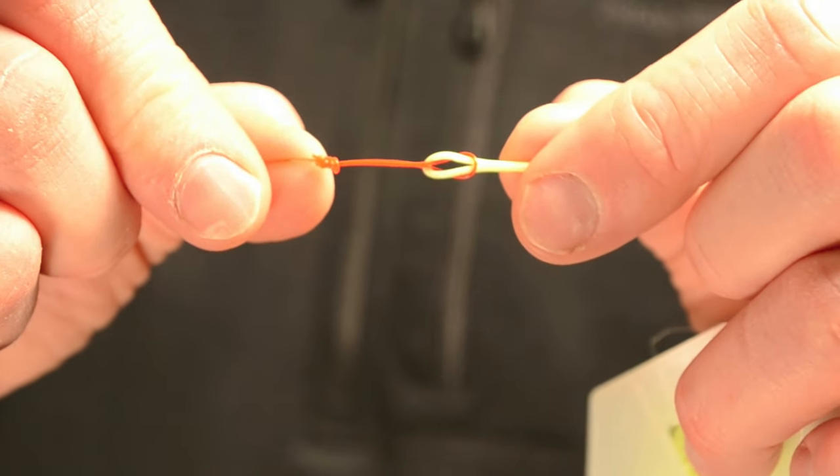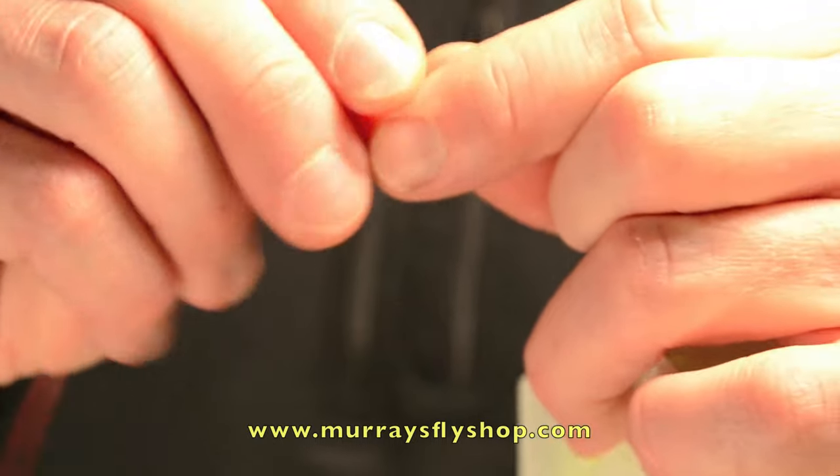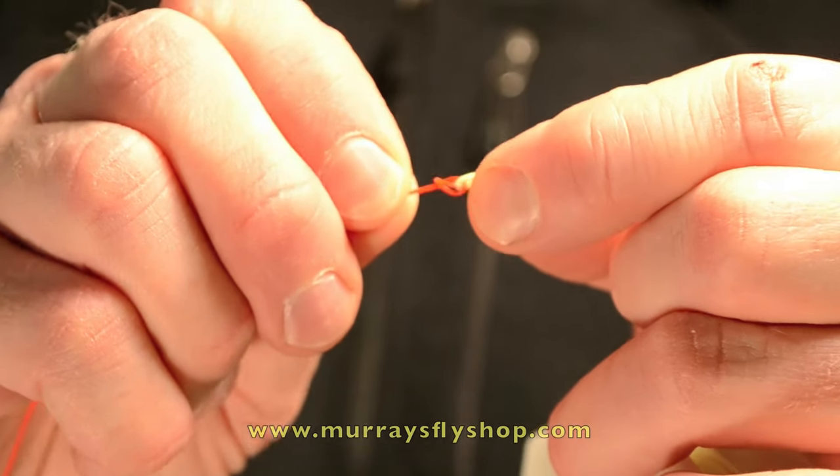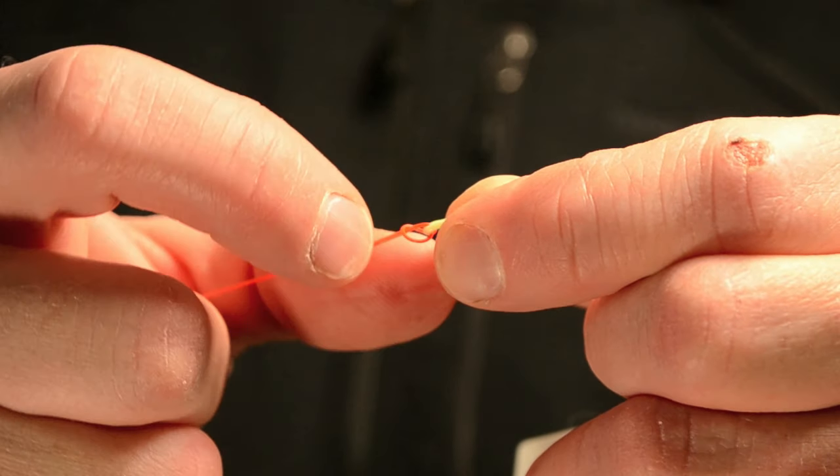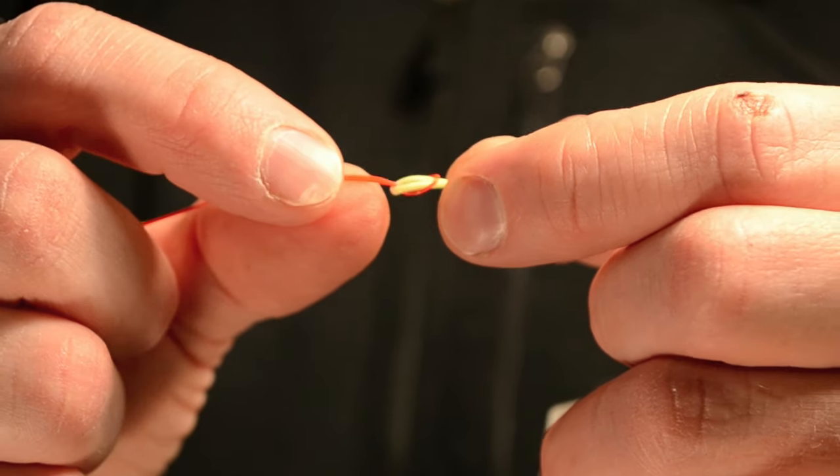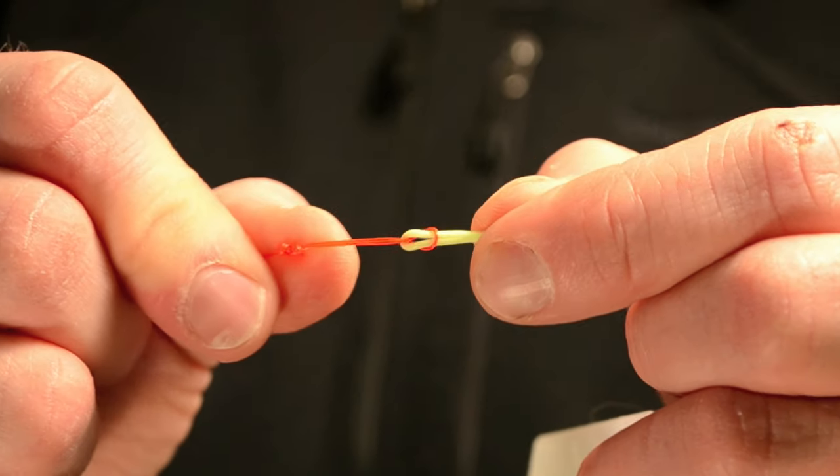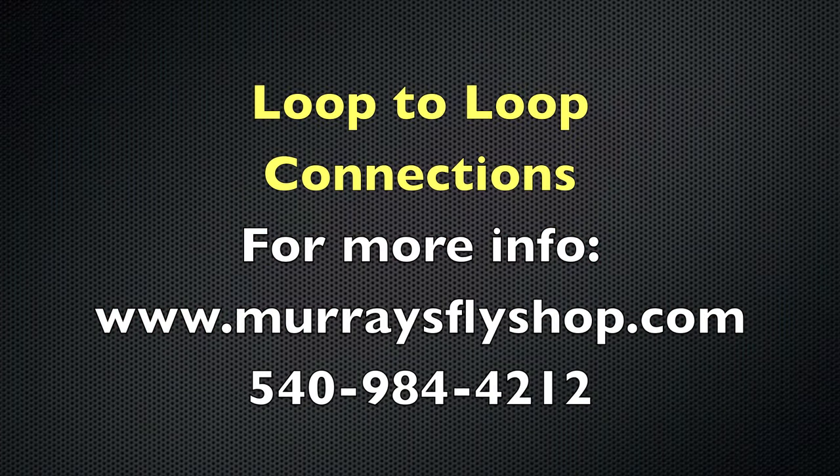When we cinch down from this point, we want to be sure that our loop does not turn out looking like this. That will cut itself - it will cause the monofilament in the butt of your leader to cut itself. You want it to go together as such. Thank you so much. Here we go. Thank you.